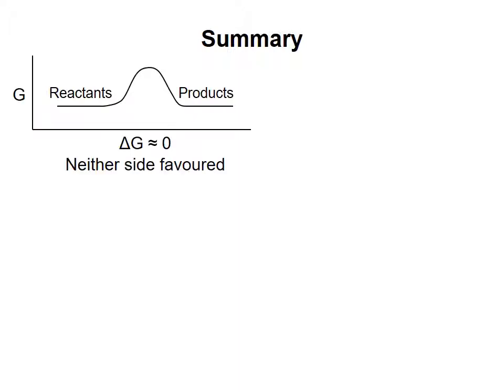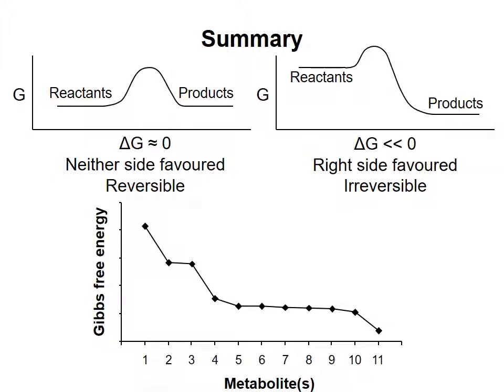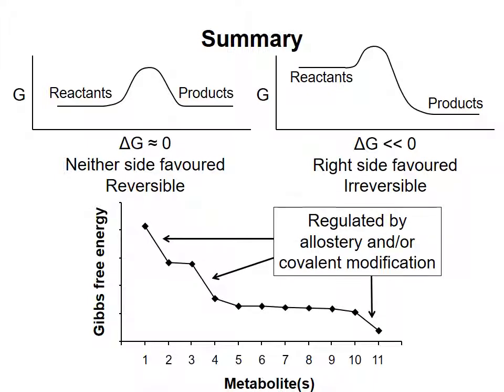Let me summarize what I've discussed in this module. For any biochemical reaction, the side favored is determined by the change in Gibbs free energy, or delta G. Most reactions in metabolic pathways are at or near equilibrium, where neither side is favored; relatively small changes in metabolite concentrations shift these reversible reactions to the right or left. Some reactions have large negative delta G values — they are insensitive to metabolite concentration changes and are said to be irreversible. The flux of molecules through a metabolic pathway is determined by the rates of irreversible reactions, while reversible reactions simply respond to supply and demand. Therefore, regulation of metabolic pathways occurs largely through changing the activity of enzymes that catalyze the irreversible reactions.